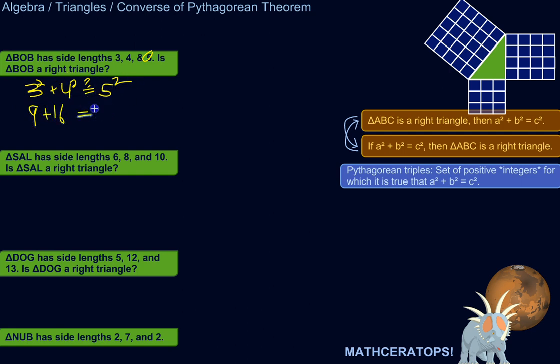And 5 squared is 25. 9 plus 16 is 25. So yes, 25 does equal 25. So because A squared plus B squared equals C squared, we know that triangle BOB is a right triangle.